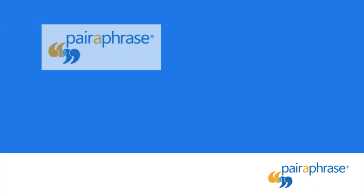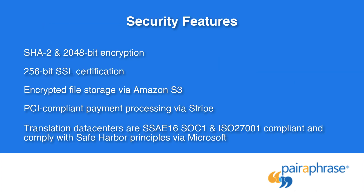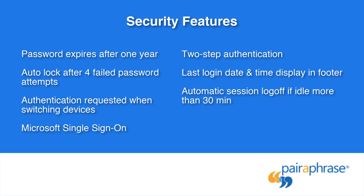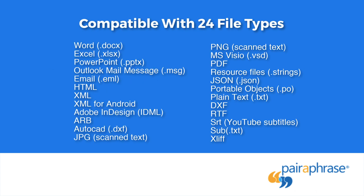Another differentiator between Paraphrase and other translation APIs is security. Paraphrase is a secure translation platform. It meets high standards for data security and confidentiality. All Paraphrase API communication is encrypted over HTTPS. Any non-secure requests are automatically rejected, so we recommend establishing a test connection with the secure API entry point before sending sensitive data.